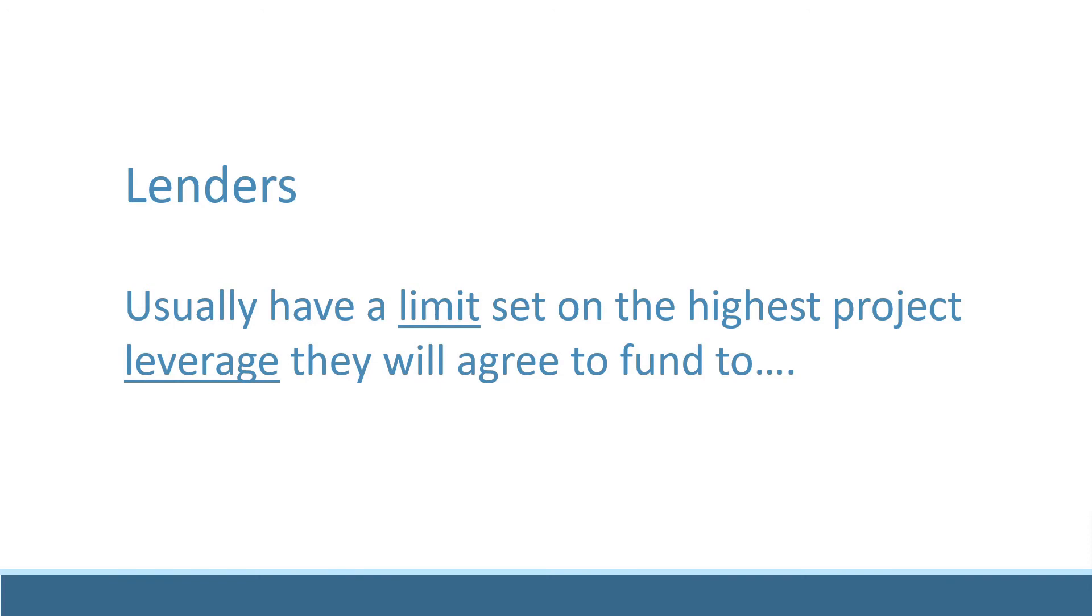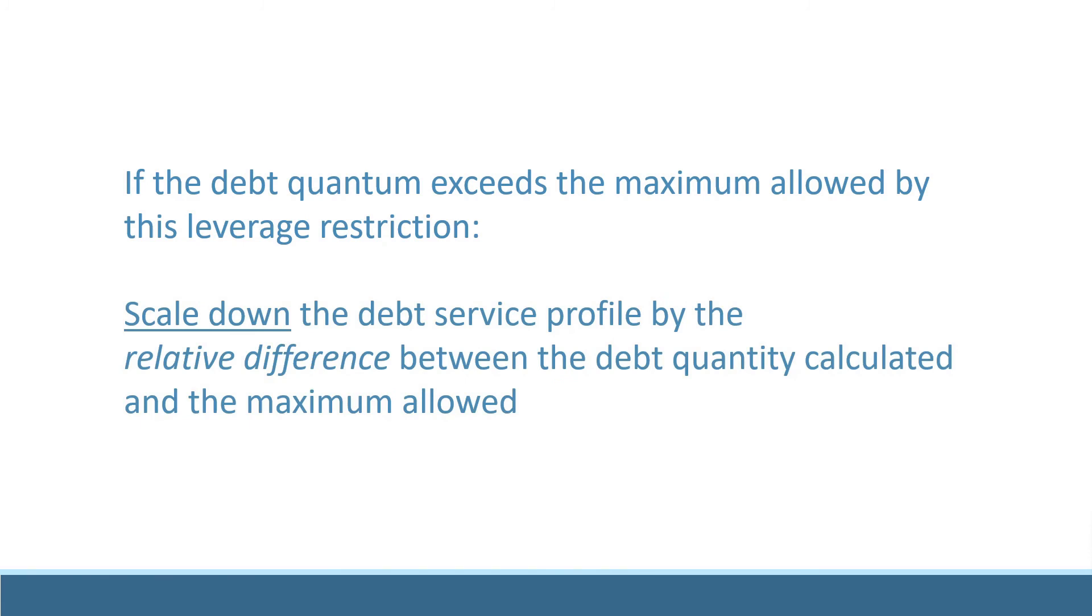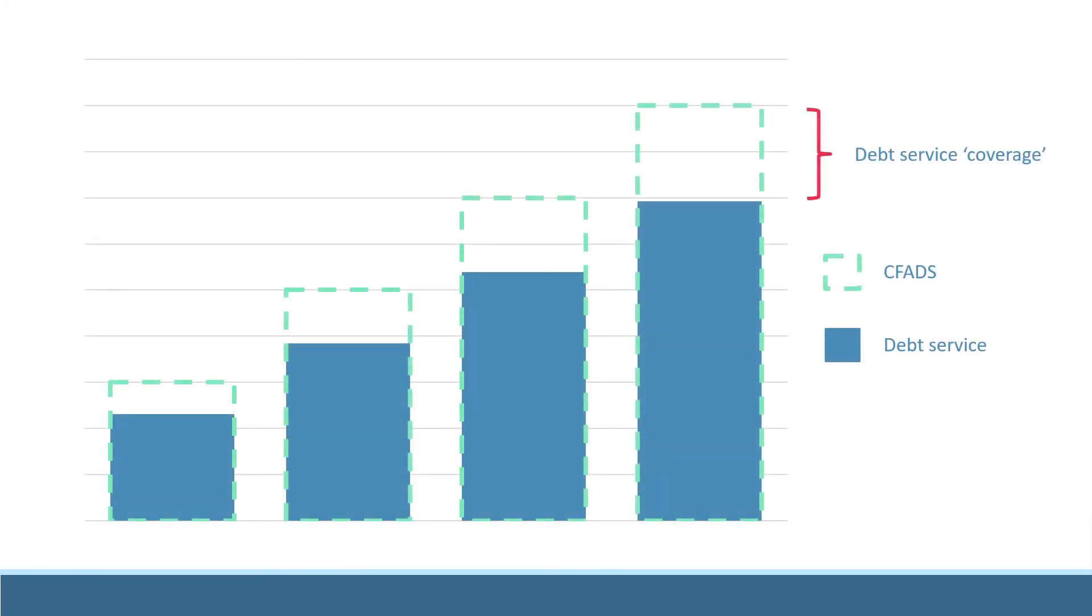If the debt sized with the minimum coverage requirements breaches the maximum leverage, all that we need to do is scale down the sculpted debt payments by the relative difference between the current debt and the maximum allowed by lenders. Note that after doing this, the DSCRs on the debt repayment profile are higher than before.